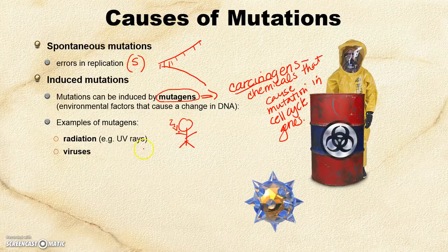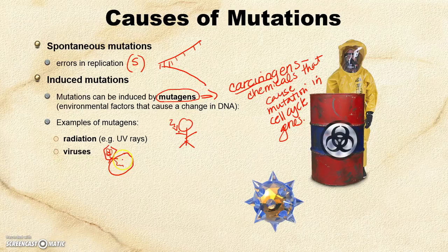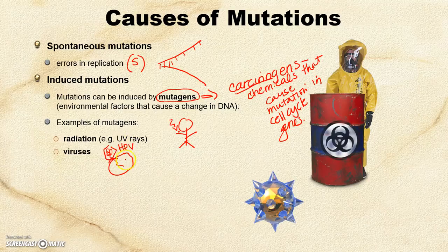Viruses can also cause mutations. Remember, viruses are just protein with DNA or RNA inside. When those land on cells, this genetic material comes in and changes the genetic material inside the host cell. Sometimes this extra DNA can insert itself into the host genome and cause mutations. For example, you get the HPV vaccine, and it's really important to get that one because HPV causes cervical cancer — the genetic material in the HPV virus can mutate DNA within the cervix.